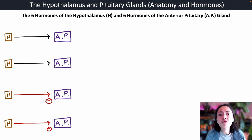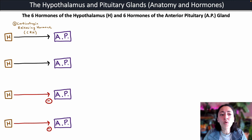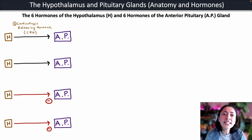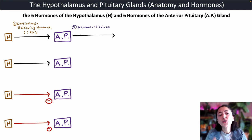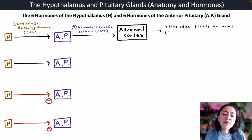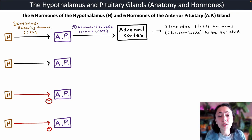The next hormone secreted by the hypothalamus is corticotropin releasing hormone or CRH. 'Corticotropin' means changing the cortex, so we know this will eventually target the adrenal cortex. CRH triggers the anterior pituitary gland to secrete adrenal corticotropic hormone or ACTH, which targets the adrenal cortex and specifically stimulates the secretion of stress hormones called glucocorticoids.